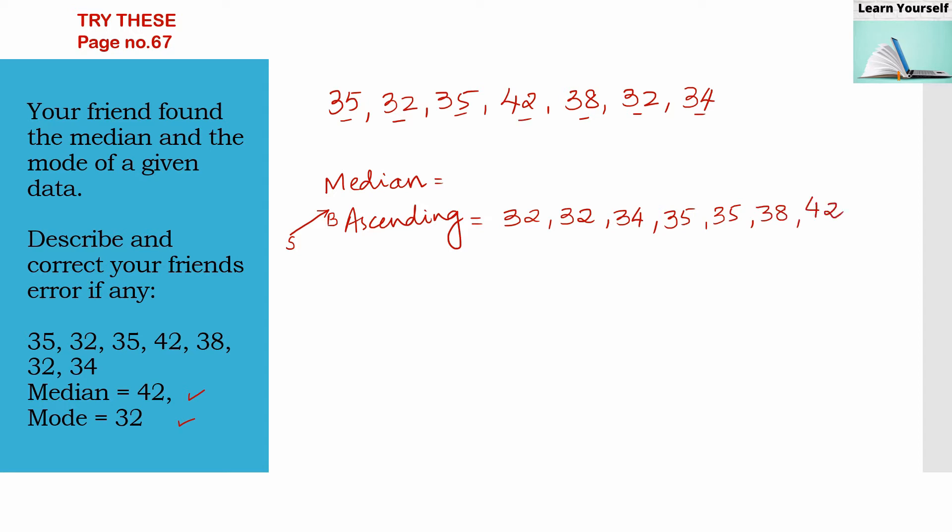So these are our data in ascending order: 32, 32, 34, 35, 35, 38, 42. Now when we are finding a median, we are going to find the middle number of this data. So how to find out that? One of the formulas which we have here is: median = (n+1)/2. So now what is this n+1? This is observation.